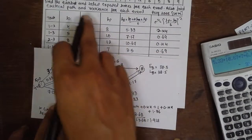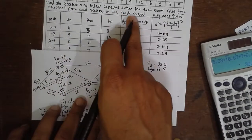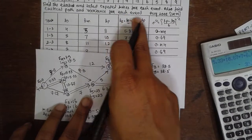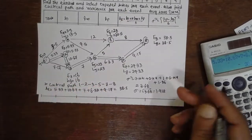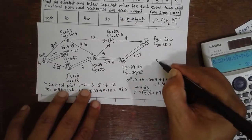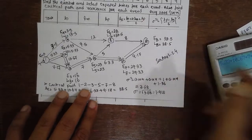Those were the critical path and variance of each event. I am Santosh Gaidankar. Thank you very much.